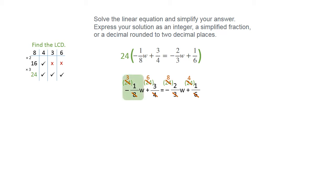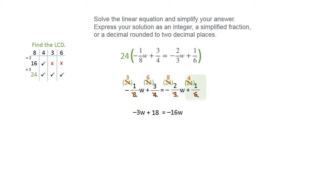So in the first term, it's negative and then 3 times 1, so that's negative 3W. For the second term, you've got 6 times 3, so that's going to be plus 18. And you've got your equal sign. You've got negative 8, a 2, and a W, so that's negative 16W. And finally, you've got 4 times 1, which is 4, plus 4.